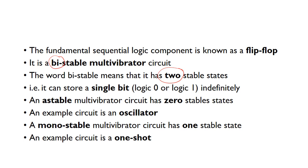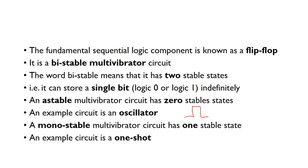There are other types of multivibrator circuits. One type is an astable multivibrator, which has zero stable states. An example of an astable multivibrator is an oscillator. Because it has no stable states, if it's in a state of zero it's unstable, so it jumps to a one, and it's unstable there, so it jumps back to zero. Because each state is unstable, it jumps back and forth, giving oscillating behavior between the two states.